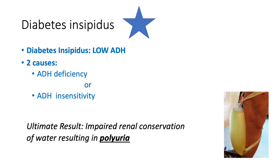DI — less letters, less ADH, less water in the body. Less water in the body means the water is leaving through the urinary tract, so diabetes insipidus leads to more water in the urine — polyuria. There are two major causes of DI: either we're not making enough ADH, or we're making enough but not responding to it — ADH insensitivity. Either way, ADH is not working enough in the body, leading to little water in the body and lots of water in the urine.